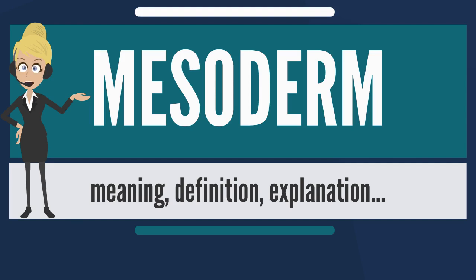There are three important components: the paraxial mesoderm, the intermediate mesoderm, and the lateral plate mesoderm. The paraxial mesoderm forms the somitomers, which give rise to mesenchyme of the head and organize into somites in occipital and caudal segments.